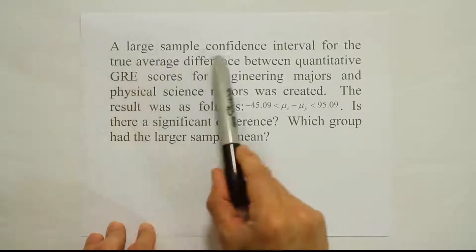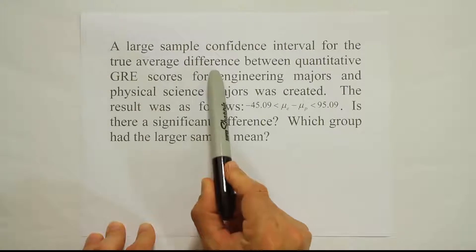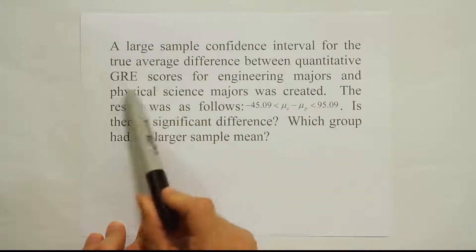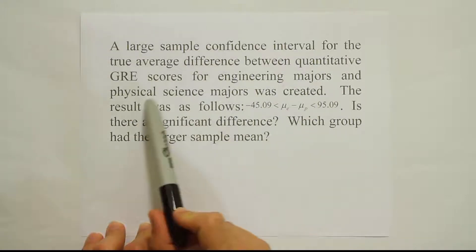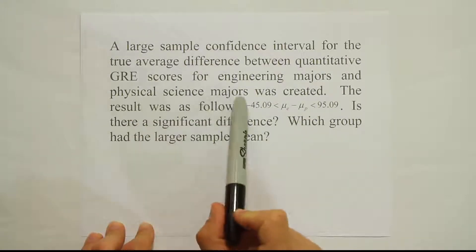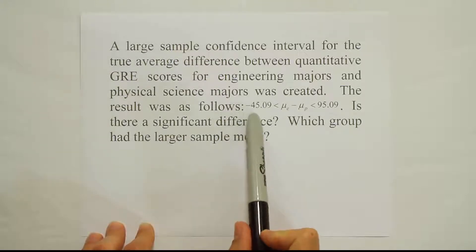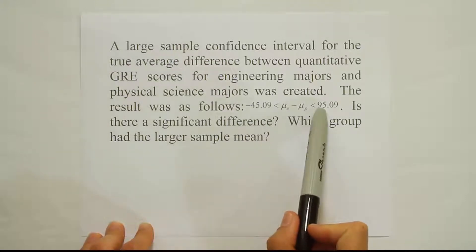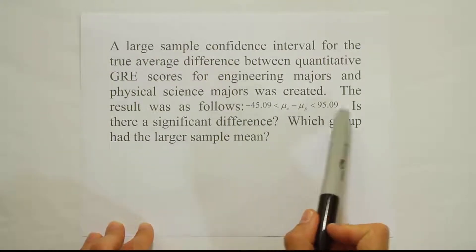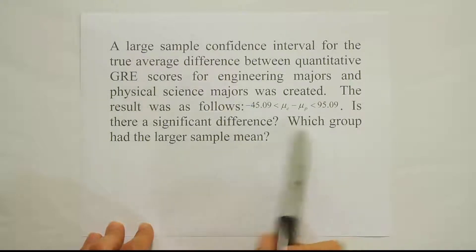A large sample confidence interval for the true average difference between quantitative GRE scores for engineering majors and physical science majors was created. The result was minus 45.09 to 95.09. Is there a significant difference, and which group had the larger sample mean?